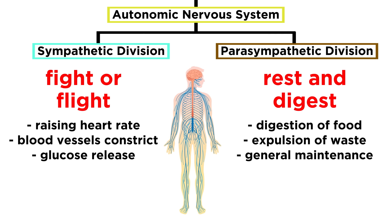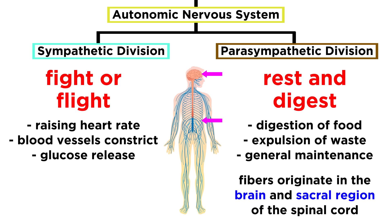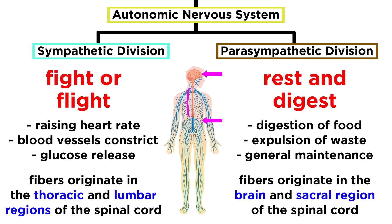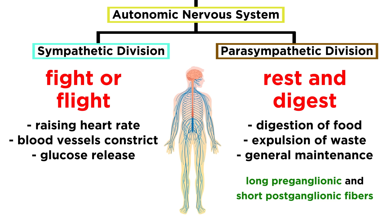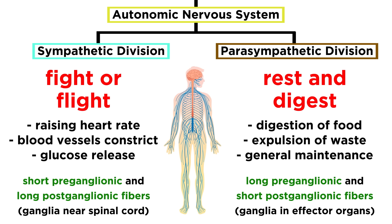To get more specific about the anatomy of these divisions: parasympathetic fibers originate in the brain and sacral region of the spinal cord, which are the opposite ends of the central nervous system, whereas sympathetic fibers originate in between, in the thoracic and lumbar regions of the spinal cord. Parasympathetic has long preganglionic and short postganglionic fibers, with the ganglia residing in the effector organs, while the opposite is true for sympathetic, so the ganglia sit very close to the spinal cord.